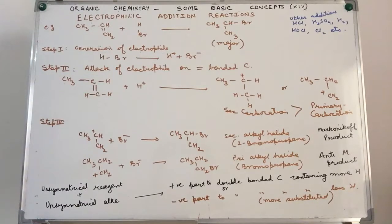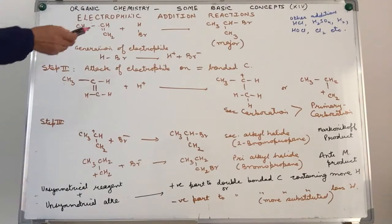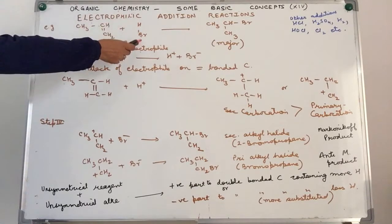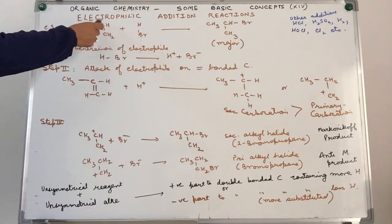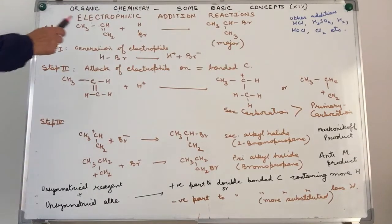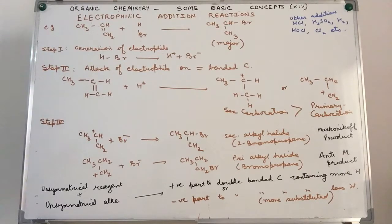Electrophilic Addition Reactions. Addition reactions simply involve the addition of a simple atom or group across the doubly or triply bonded carbon atoms. In other words, it's addition across an unsaturated molecule — unsaturated because we could have addition across a double bond or a triple bond.